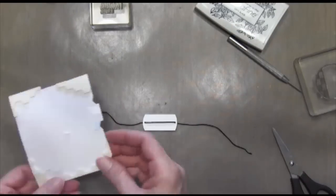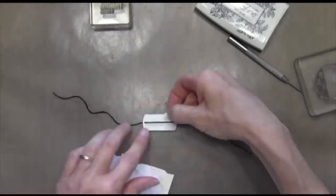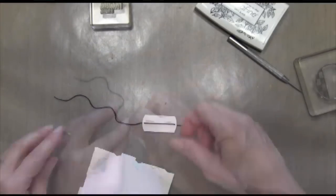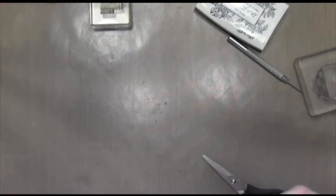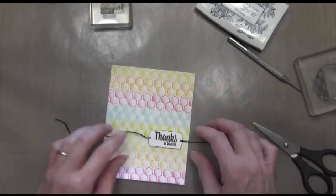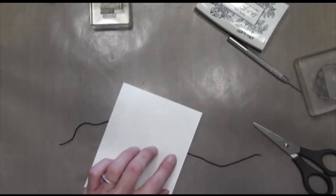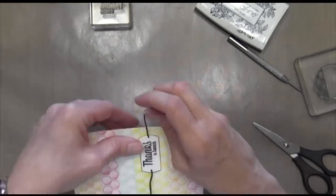I'm going to take some dimensionals which is foam adhesive. I'm just going to cut a couple of pieces to fit because I want this to pop up. I'm going to place it right where I want it and then wrap the thread around either side. I'm going to adhere it on the back with some tape runner.